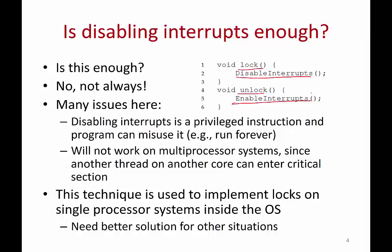The answer is: not always. Disabling and enabling interrupts is a privileged instruction and you don't want user programs to have this kind of power. You don't want to give some unknown program the power to turn off all interrupts, because it might never turn them back on. A buggy program could simply disable interrupts and run forever on the machine without ever enabling them again, preventing the operating system from ever getting a timer interrupt to context-switch it out.